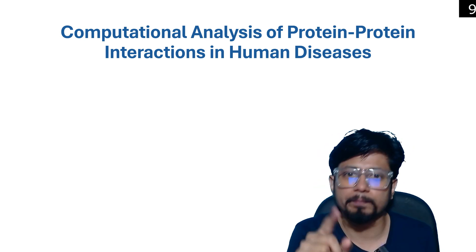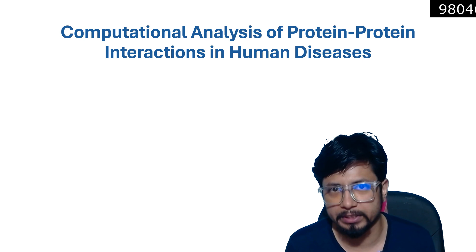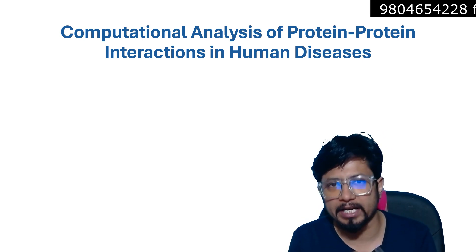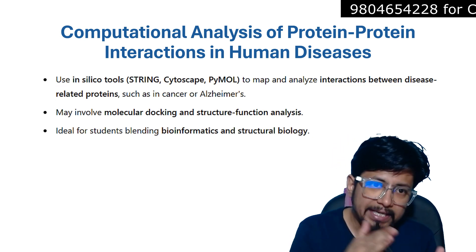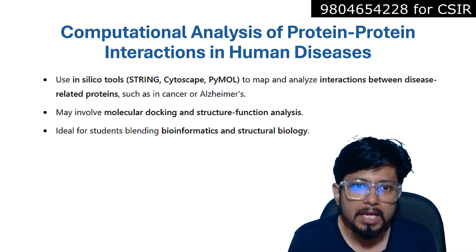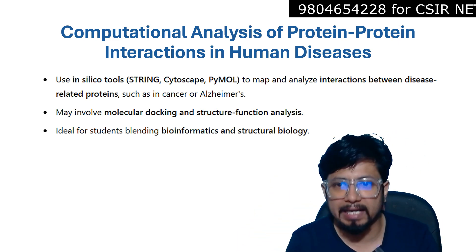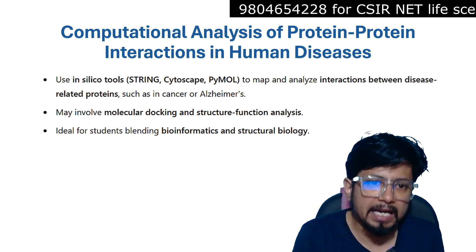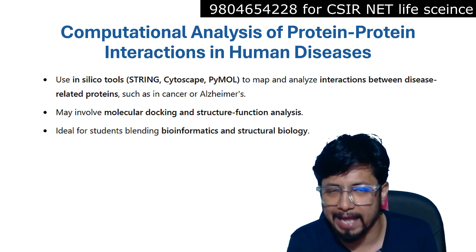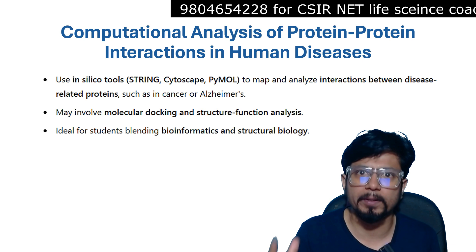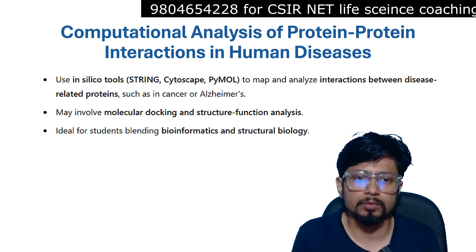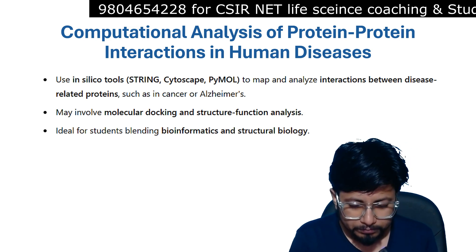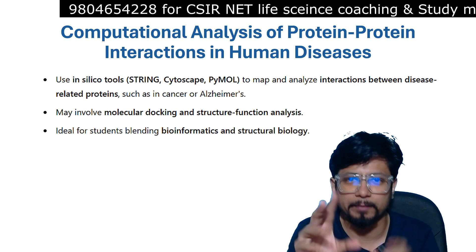The bonus topic is computational analysis of protein-protein interaction in human diseases. For diseases like Alzheimer's and cancer, protein-protein interaction plays a crucial role. We use in silico tools such as STRING, Cytoscape, and PyMOL to map and analyze interactions between related proteins. This may involve molecular docking and structure-function analysis of protein complexes. It is ideal for students blending bioinformatics and structural biology, and it is the type of work the speaker did for his own summer internship.